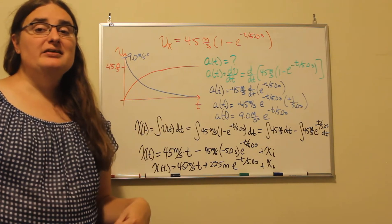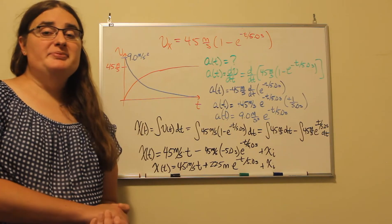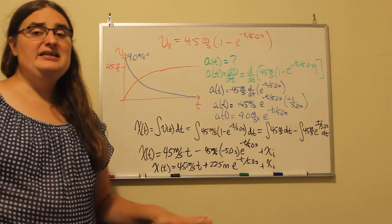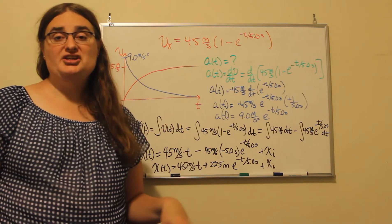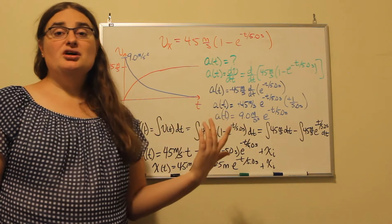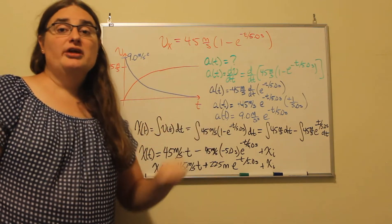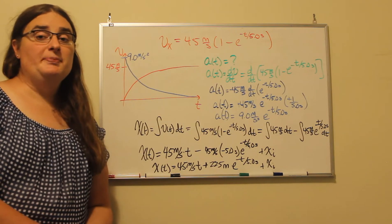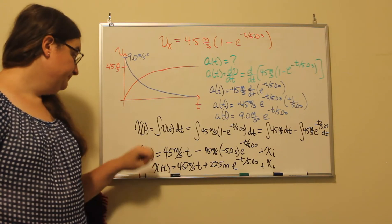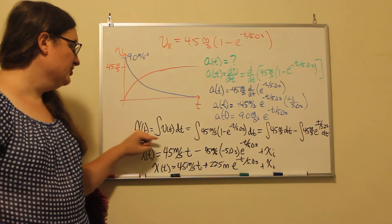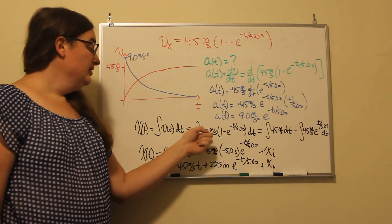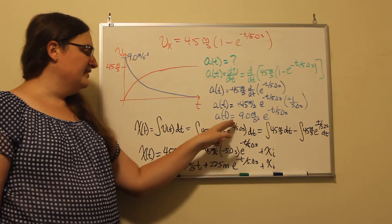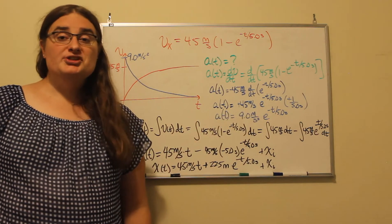The last piece we need is to figure out the position by integrating the velocity with respect to time. We aren't given any information about the starting location, so we won't be able to draw an exact graph, but we can calculate the general form of the equation. The distance our object travels is the integral of 45 meters per second minus 45 meters per second times e to the negative t over 5 seconds, both with respect to dt.